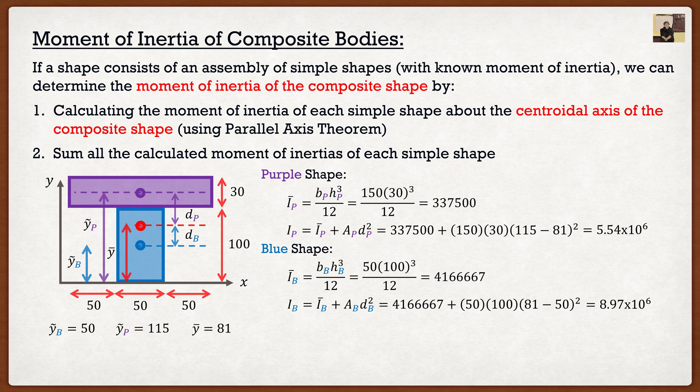From there, I can find the total moments of inertia of this composite shape, just by summing everything together. So all I'm going to do is take the moments of inertia of the purple shape around the red axis, and add it to the moments of inertia of the blue shape, also around that red axis, and we get the following.